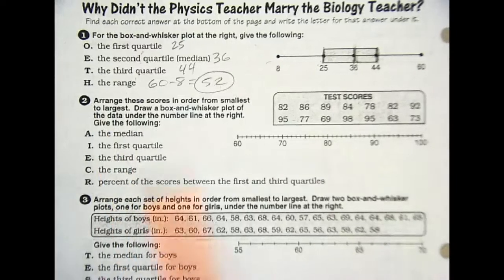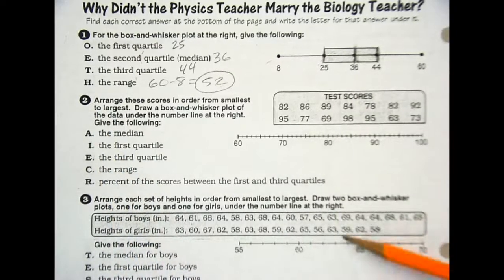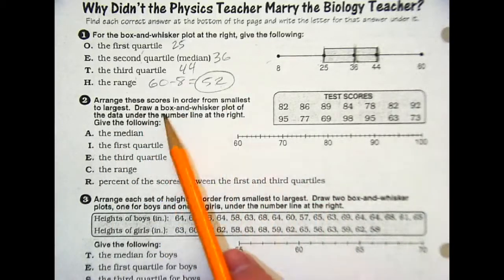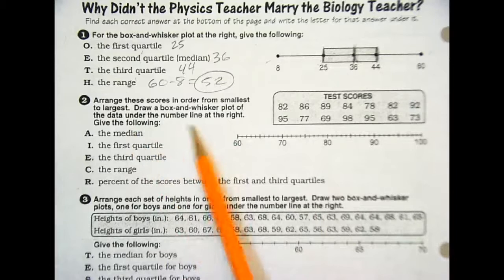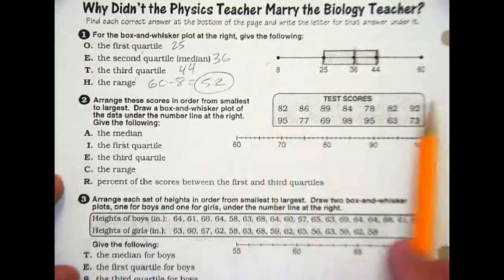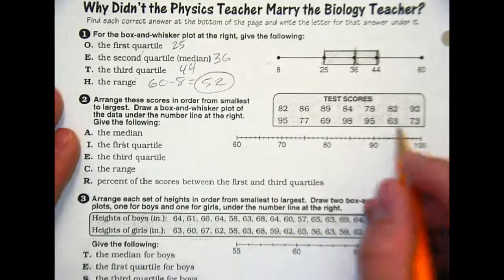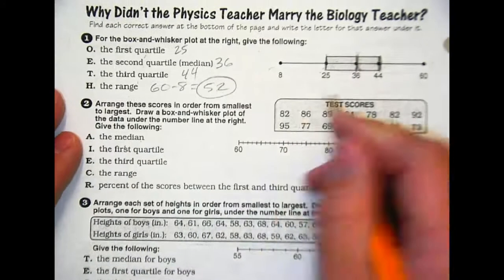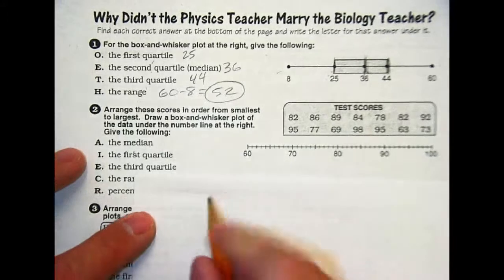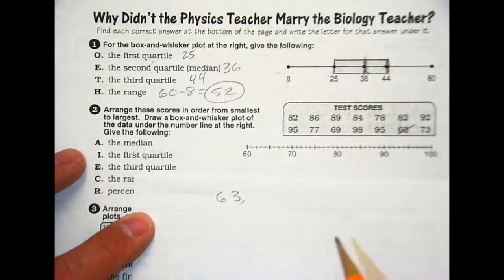I want to work through problem two with you. And then on three, you're going to be doing three and four on your own. So looking at problem two, arrange these scores in order from smallest to largest. Draw a box and number line to the right. So the first thing you need to do is find the mean. So we need to put these pieces of data in order from least to greatest. So we're doing that. You may want to have a separate sheet of paper out to do some of this.